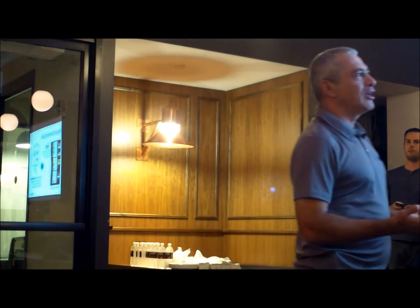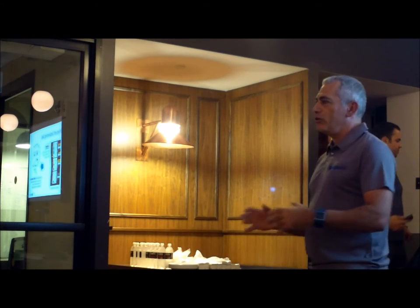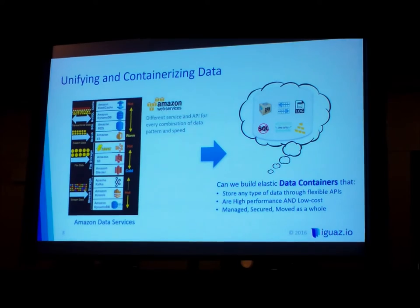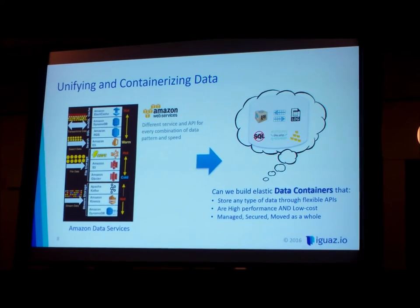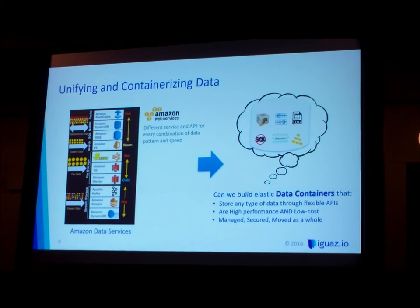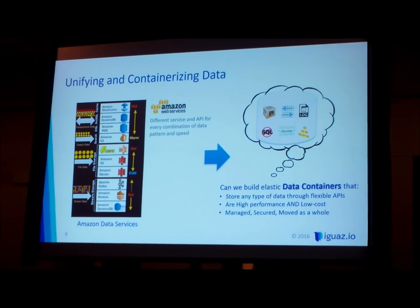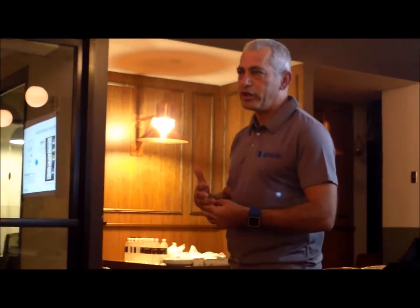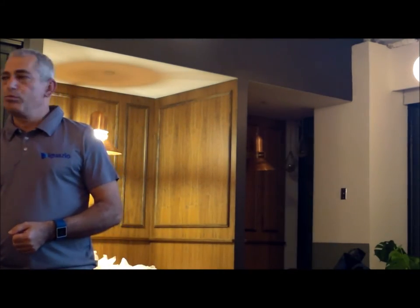What we're really looking for is a solution — let's call them data containers — as a way to contain all the data for a business application in one logical construct. That data container can store any type of data at every speed. I can store objects that could be either fast or slow depending on my pattern. I don't want to change the API. And maybe I can store all the different structures an application requires — whether streams, objects, or tables — in the same bucket, zip them and ship them to a different location, and start working.